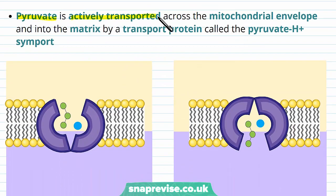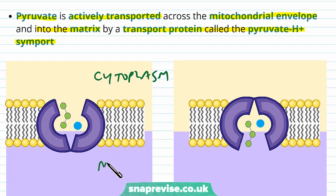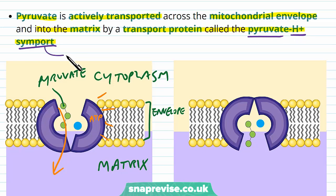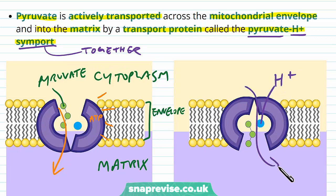So firstly, the pyruvate is actively transported across the mitochondrial envelope, which is the outer and inner membranes. And it goes into the matrix by a transport protein called pyruvate hydrogen ion symporter, or symport. So essentially, if we imagine this is the cytoplasm, and on this side we have the matrix, and we can represent the envelope of the two membranes by one membrane, we need to get the pyruvate molecule — and remember there are two of them for the one glucose — across into the matrix. This requires active transport, and so uses ATP. A symporter means that it takes two things and transports them together. There's a hydrogen ion which goes with the pyruvate down the gradient, and it's the movement of this hydrogen ion down its gradient which allows the pyruvate and the ion itself to go into the matrix.